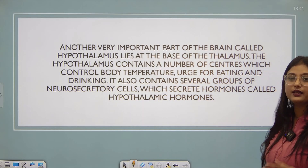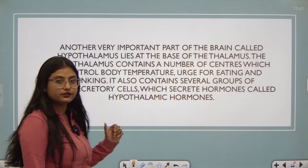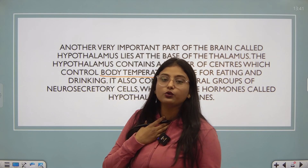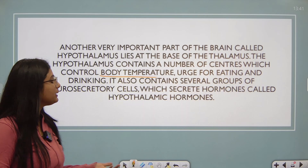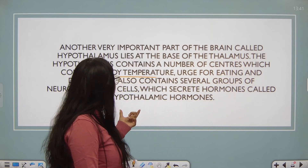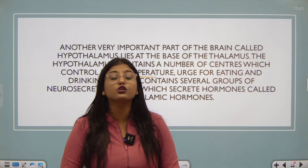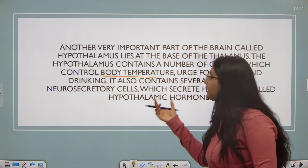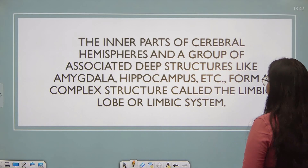Another very important part of the brain is the hypothalamus, which lies at the base of the thalamus. The hypothalamus contains a number of centers that control body temperature — our body temperature remains 37 degrees Celsius throughout summer and winter — as well as the urge for eating and drinking. It also contains several groups of neurosecretory cells that secrete hormones called hypothalamic hormones, which stimulate the pituitary gland to secrete hormones throughout the body.